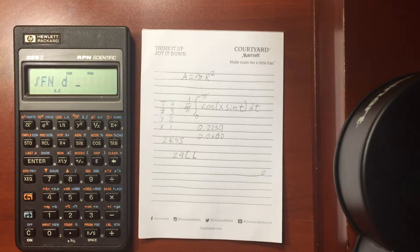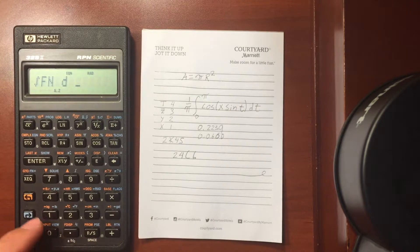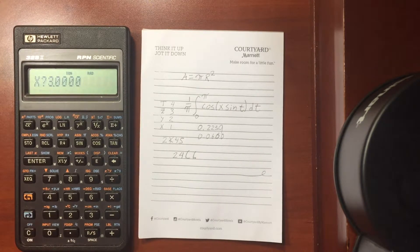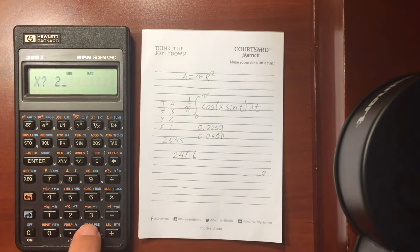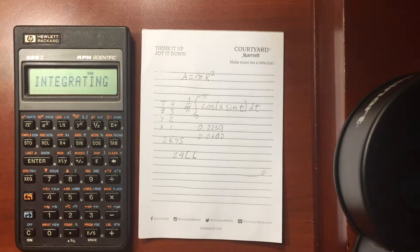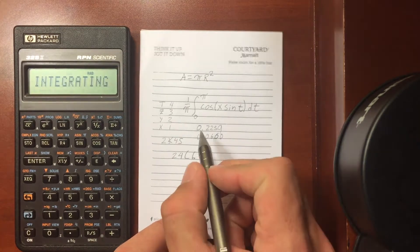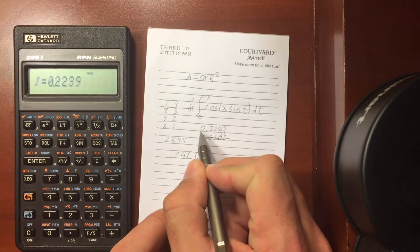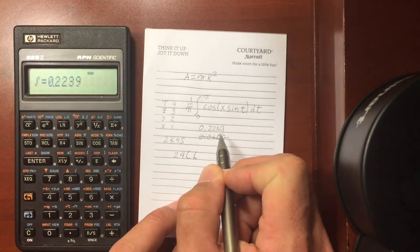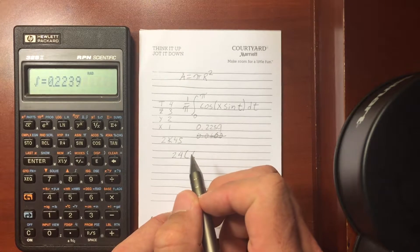Ask me what variable I want to integrate with respect to. Well, we're integrating with respect to t, so use t, and an x value of what? Well, let's do two first. Integrating, and we get 0.2239, and that's the value at x equals 2.